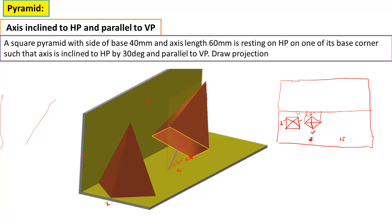In the second stage, rotate the first stage front view in the clockwise direction such that the axis will be inclined by 30 degrees, then complete the front view as it is. The size of the second stage front view and first stage front view are both the same. Then take the projections and complete the top view.